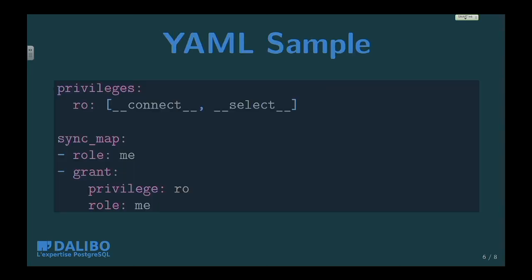Here is a sample YAML. The 'privileges' directory allows you to create a group of privileges — connect and select are well-known privileges. Each privilege is defined as three queries: one to inspect who has the privilege, one to grant it, and one to revoke it. Then you have the sync_map, which is a list like task lists in Ansible — you tell it to create a role named me, add options, and define grant rules for the privilege to apply to that role.